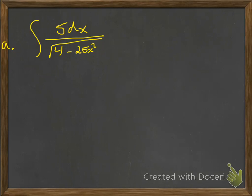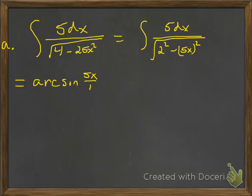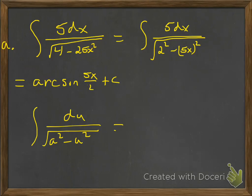So we're going to look at this one here, and we'll rewrite this as 5 dx divided by — trying to get it to fit the form of one of the three types of integrals that end up being inverse trig functions. This one looks like arc sine, so the formula is arc sine of u over a plus constant of integration, and I'll go ahead and put that formula up right below.